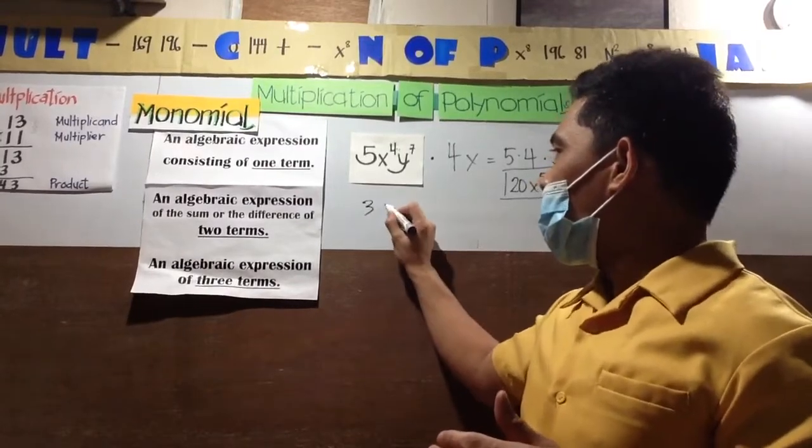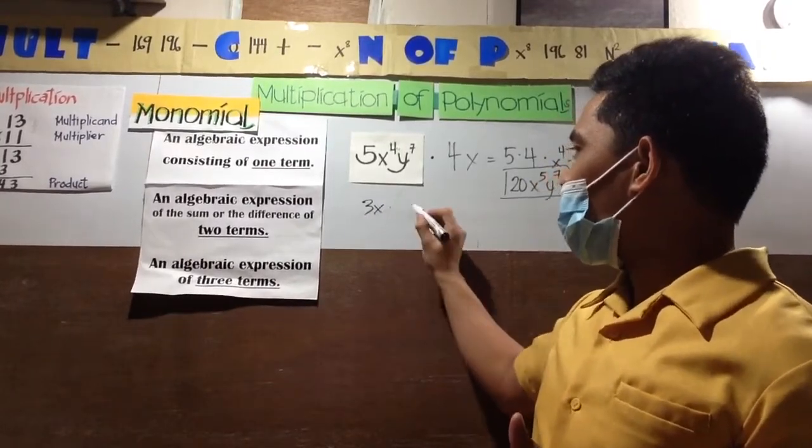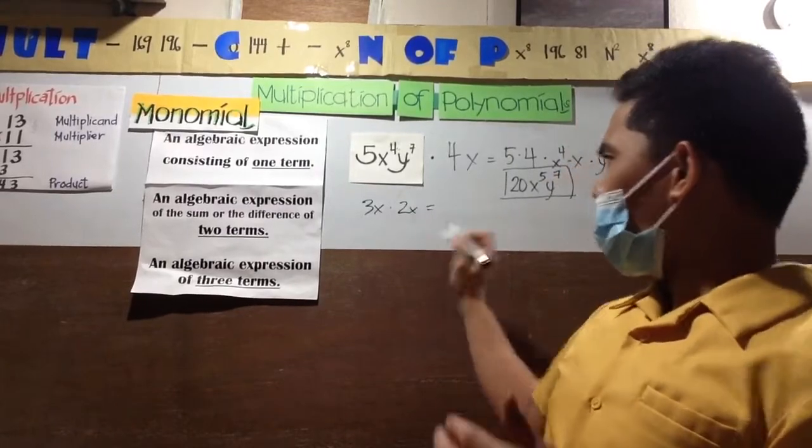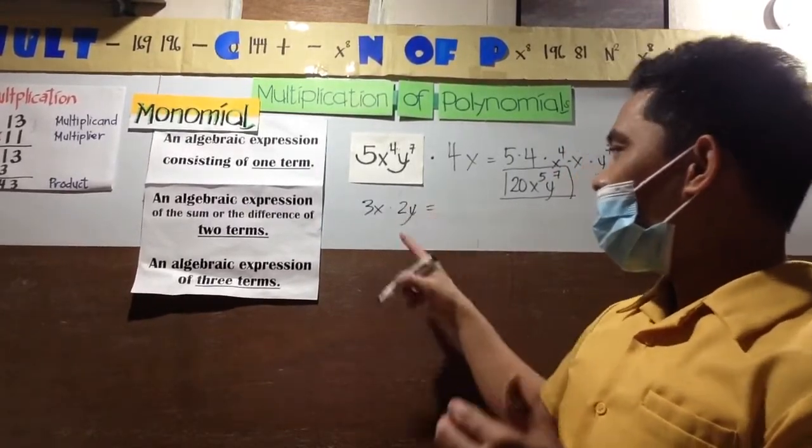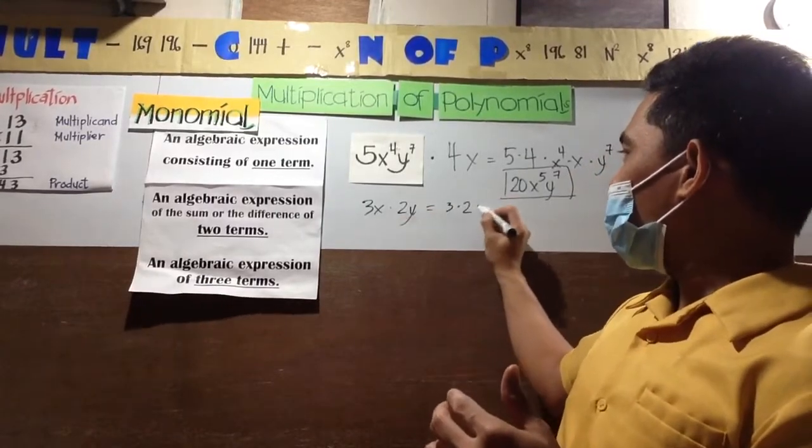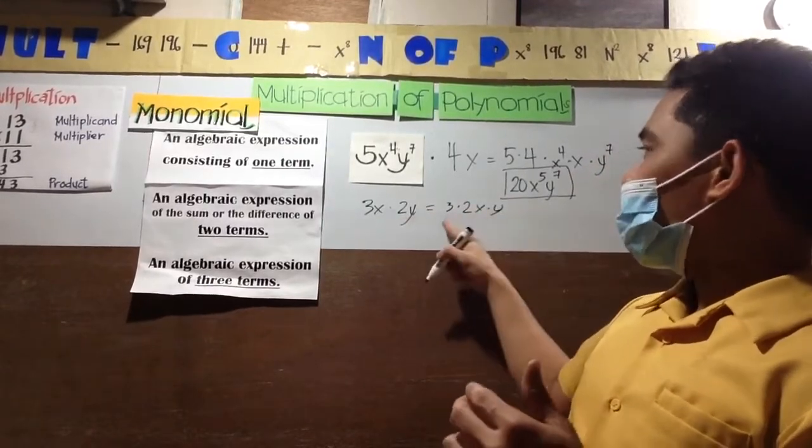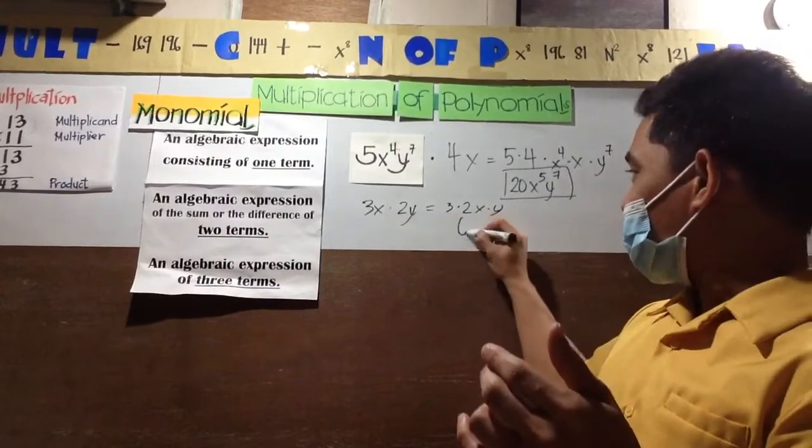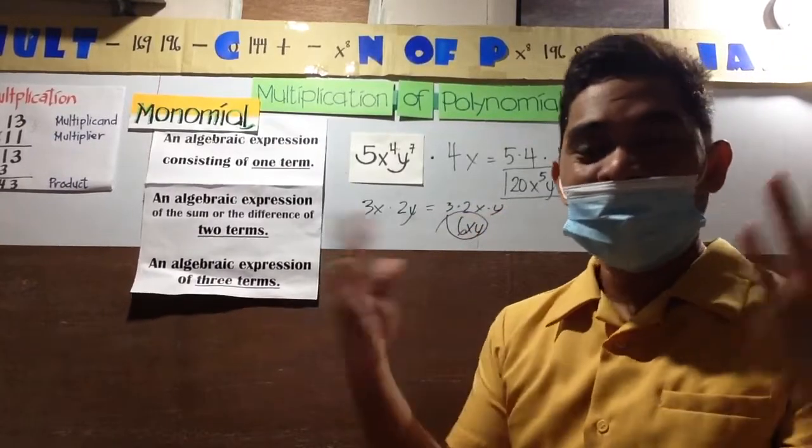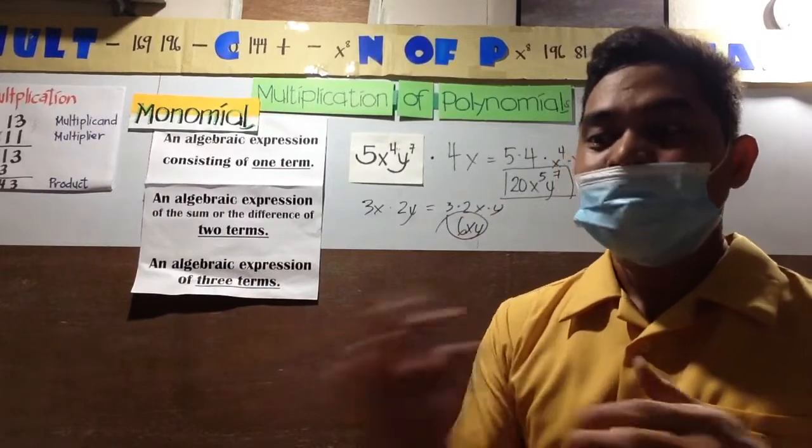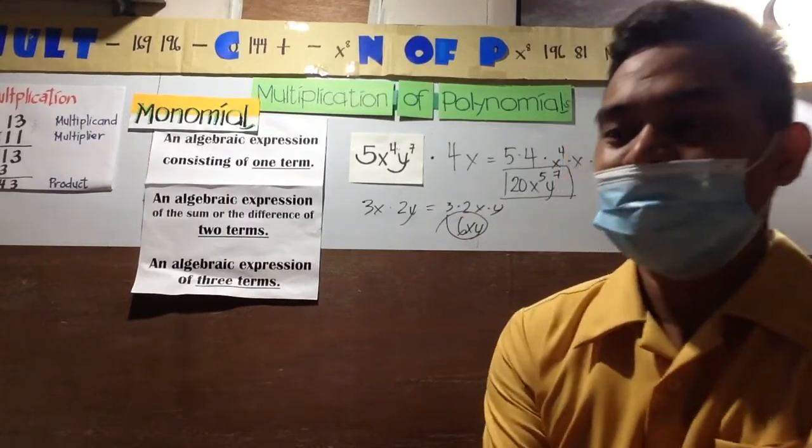So easy, let's do another. 3x times 2y squared. So what will happen - 3 times 2 times x times y squared. 2 times 3 will be 6xy squared. This is the correct answer. Now we proceed to binomial times binomial.